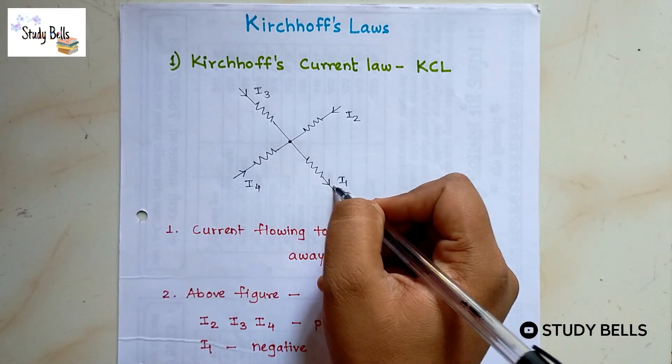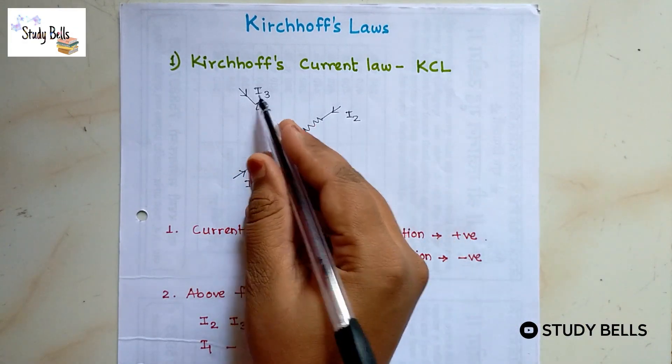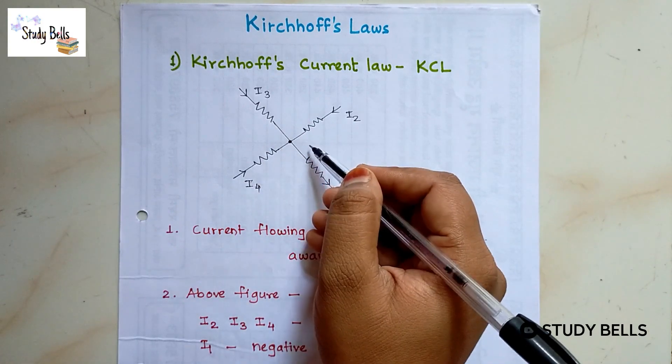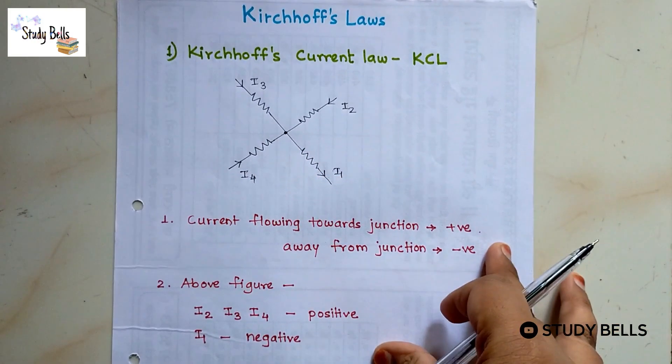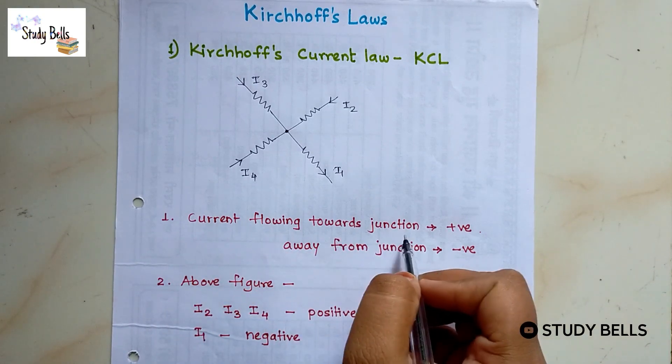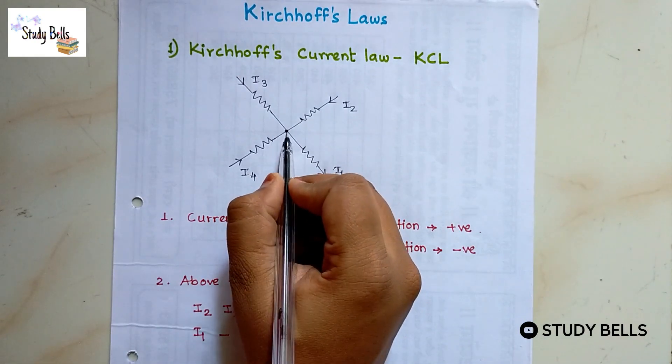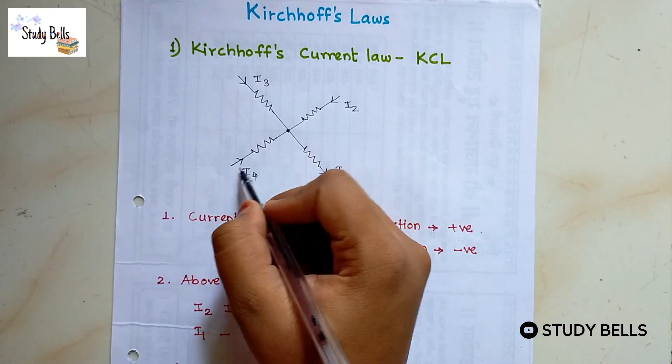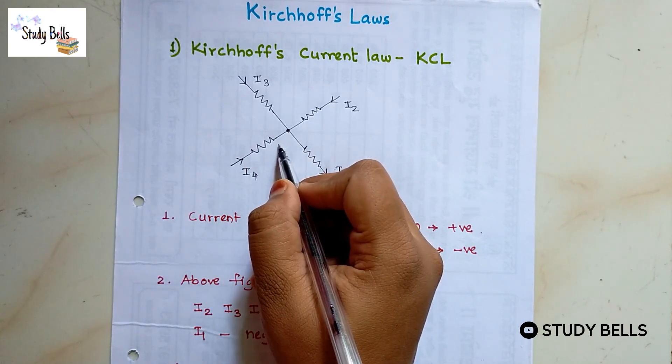Now I1 is having outward direction. I2, I3, I4 having inward direction. Here are some rules. When current flowing towards the junction we will take it as positive.